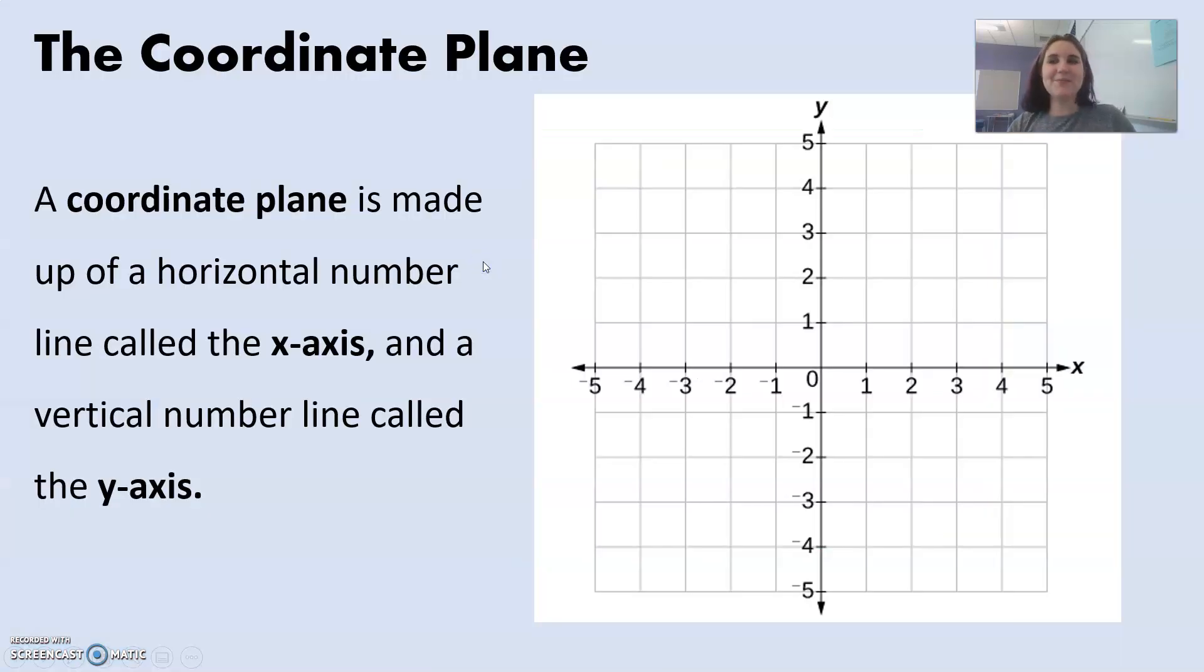The coordinate plane is made up of a horizontal number line called the x-axis. Horizontal means we're going left to right, kind of like laying flat. And a vertical number line called the y-axis, and the y-axis goes straight up and down. Vertical is kind of like you're standing, straight up and down.